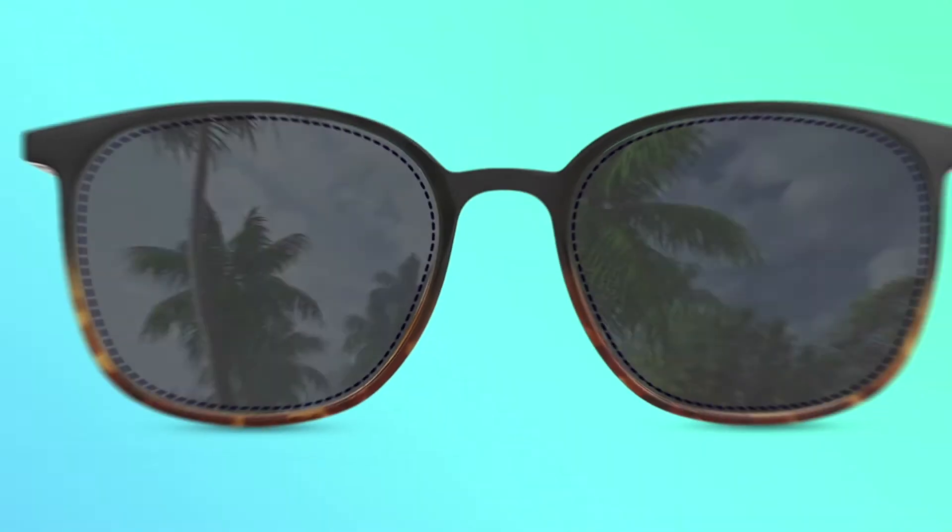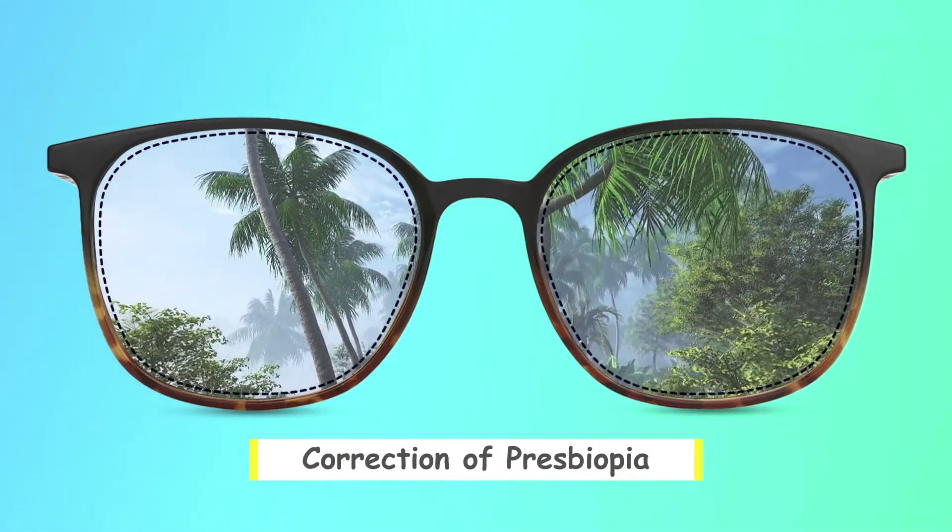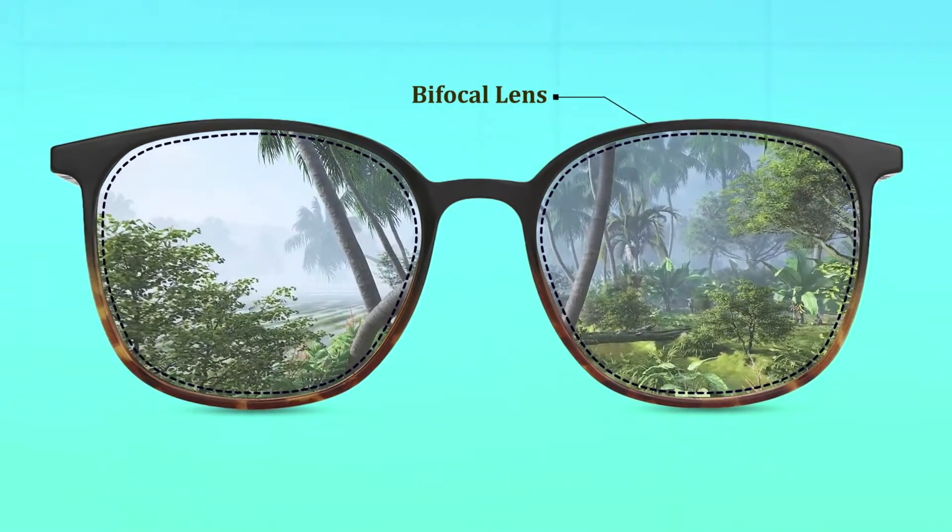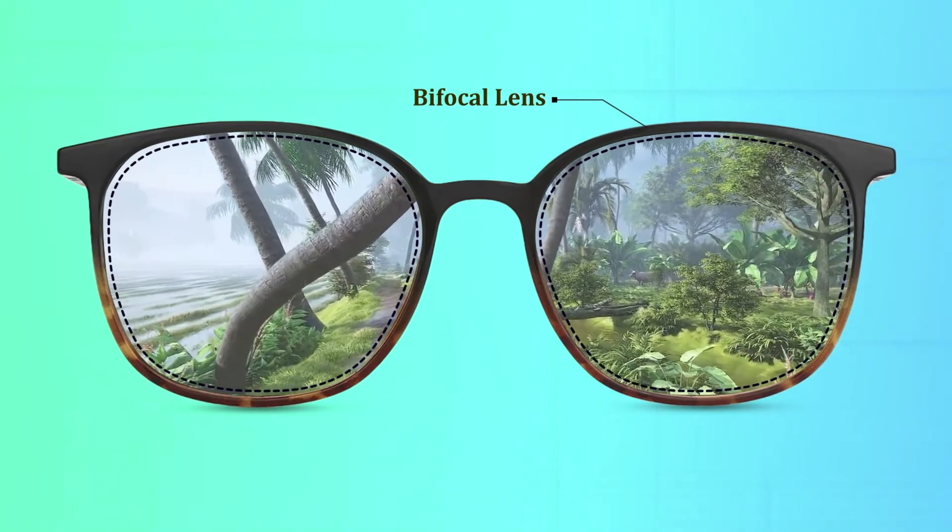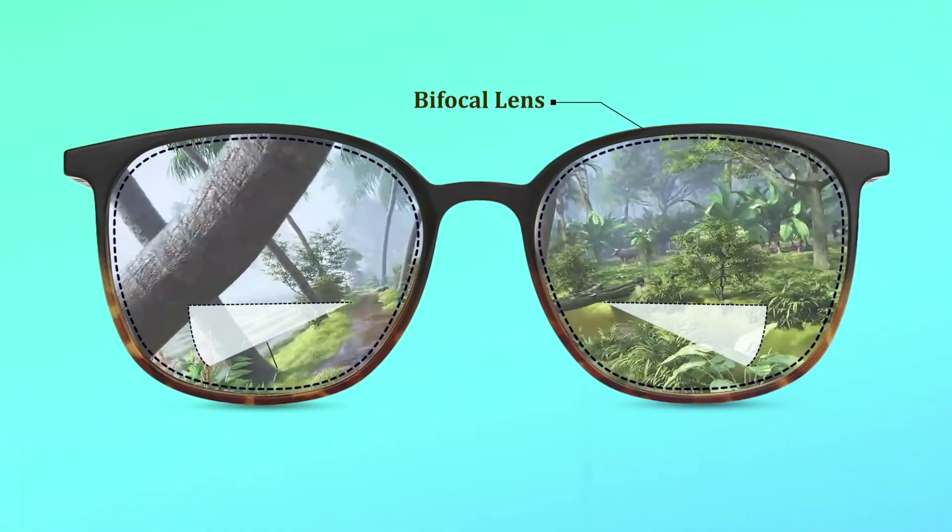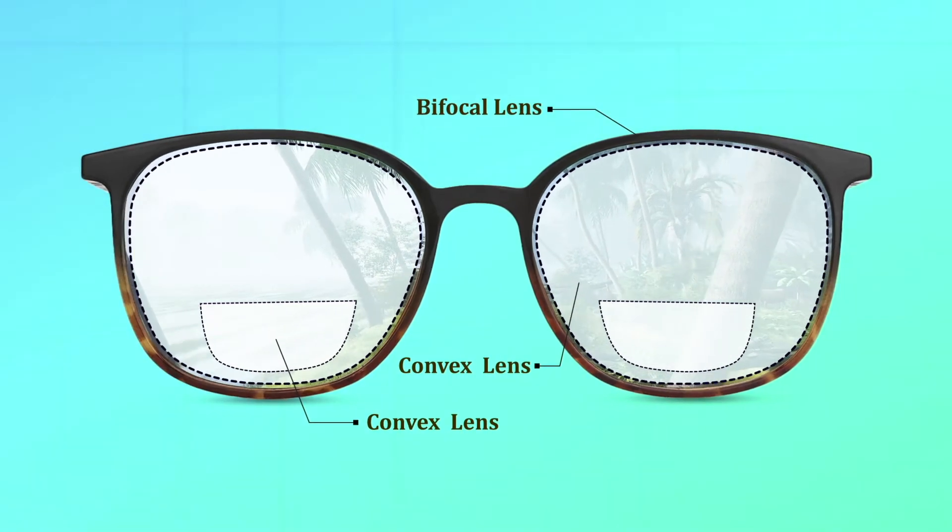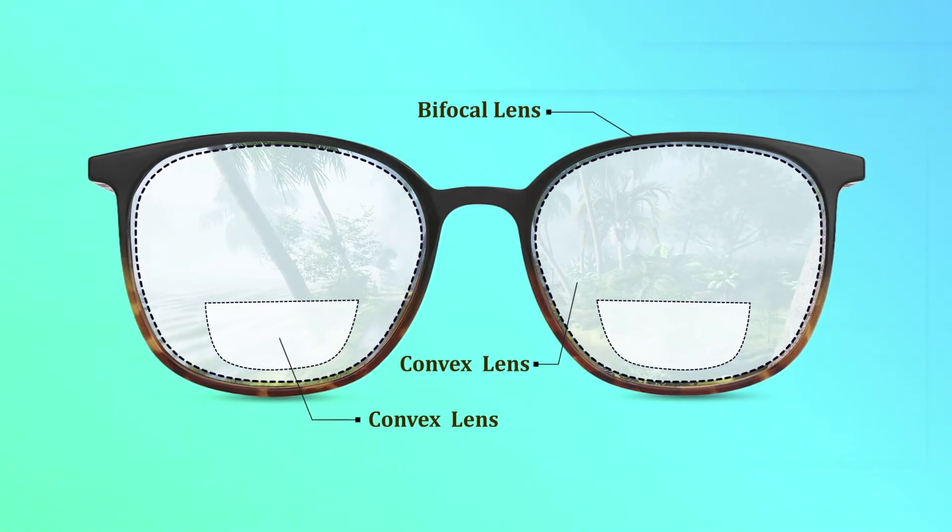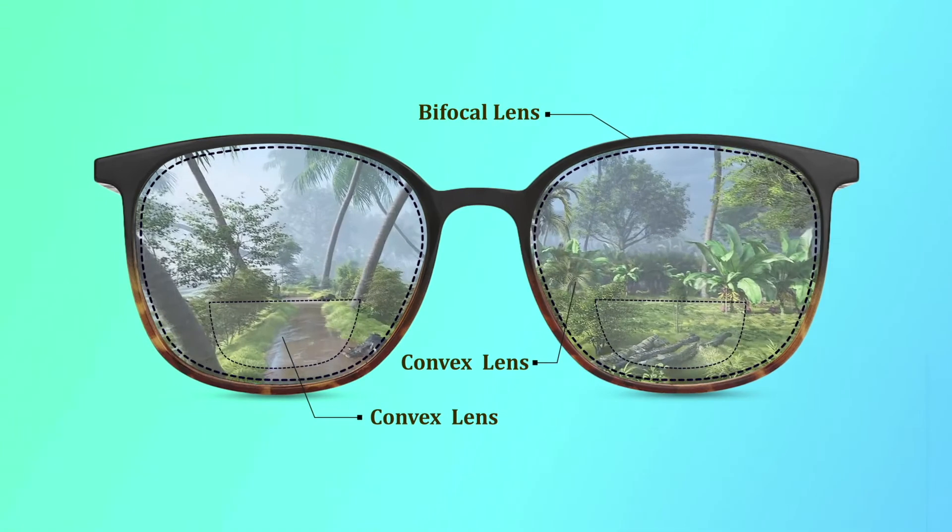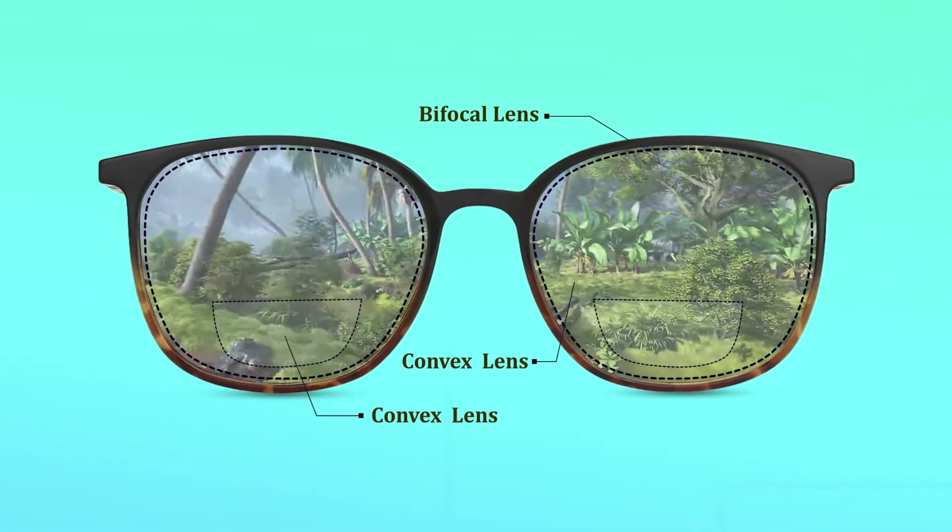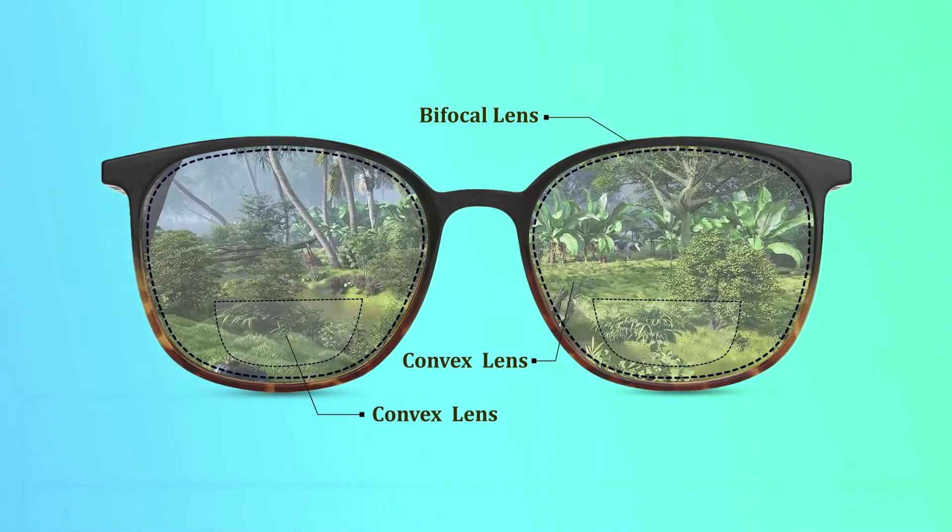Even this can be corrected. This can be corrected by the lens called bifocal lens. The bifocal lens will be having the combination of convex lens and the concave lens. They both will be merged into a lens so that the person can see the farther object as well as the nearer object.